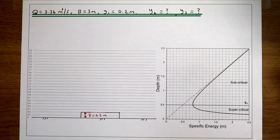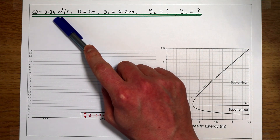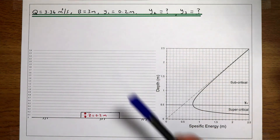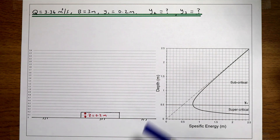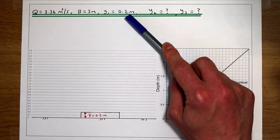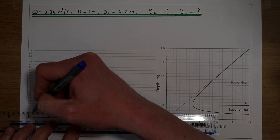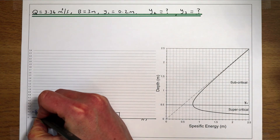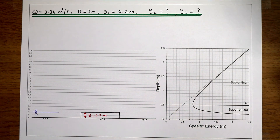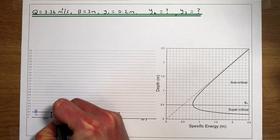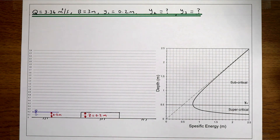This video follows on from the previous three videos where we have a river with a flow rate of 3.36 metres cubed per second that's 3 metres wide. The difference with this example is that the initial flow depth is now 0.2 metres, not 1.9 metres. So the initial flow depth of our river is 0.2 metres, and the blockage we're looking at is also 0.2 metres high — we're going to block that river with a step that's 0.2 metres high.